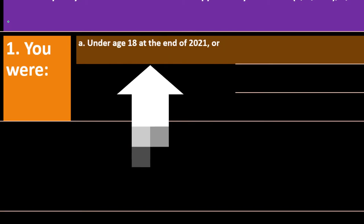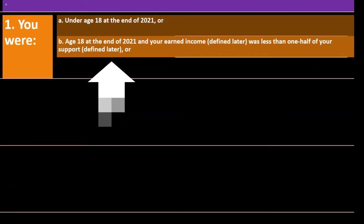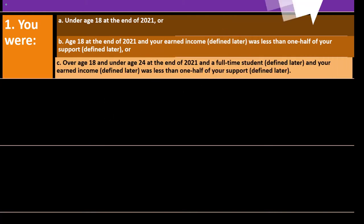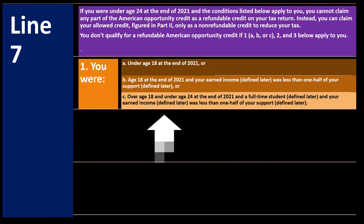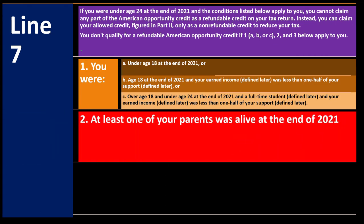Condition 1A: you were under age 18 at the end of 2021. Condition 1B: you were age 18 at the end of 2021 and your earned income was less than half your support — basically qualifying as a dependent. Condition 1C: you were over age 18 and under age 24, a full-time student, and your earned income was less than one half of your support. In situations A, B, and C you may generally be a dependent of someone else, possibly a parent.